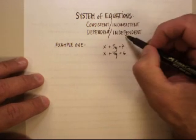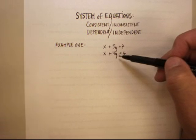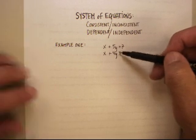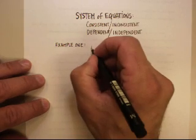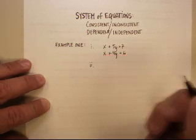Consistent, inconsistent, dependent, and independent describe the other possibilities for the answers here. Let me explain that better by first solving this system and then seeing what some possibilities are.